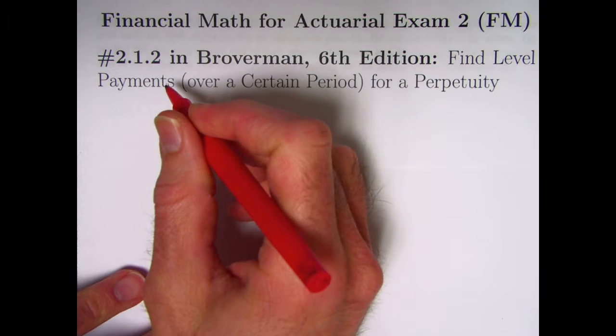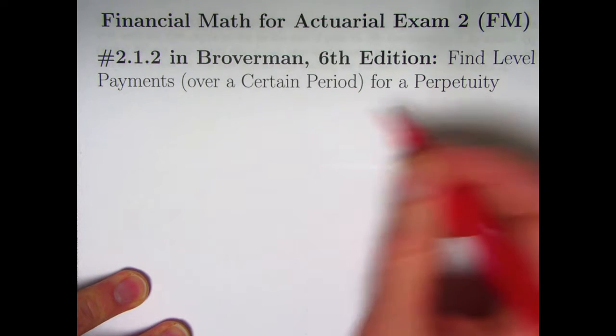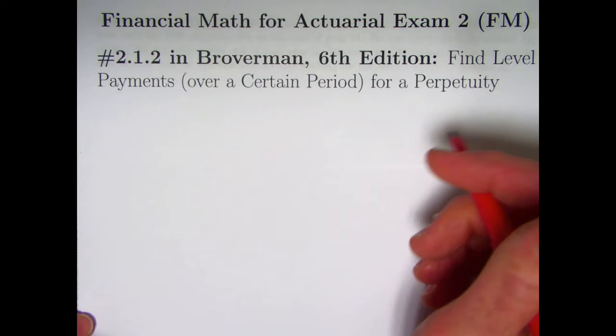In this video, we're going to look at problem 2.1.2. We're going to be finding level payments over a certain period that a person can pay to get what's called a perpetuity.